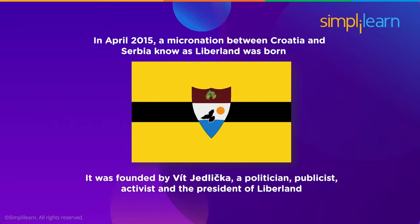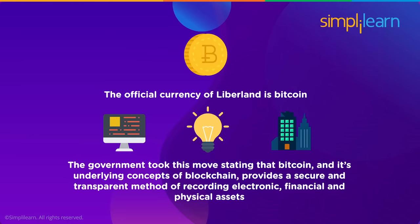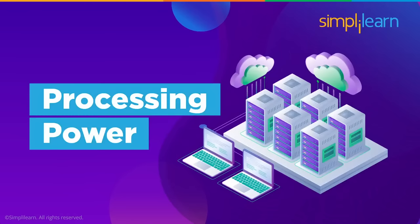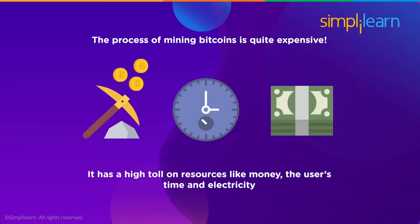Liberland: in April 2015, a micronation between Croatia and Serbia known as Liberland was born, founded by Vít Jedlička — a politician, publicist, activist, and president of Liberland. The official currency of Liberland is Bitcoin. The government took this move believing that Bitcoin and its underlying concepts of blockchain provide a secure and transparent method for recording electronic, financial, and physical assets.